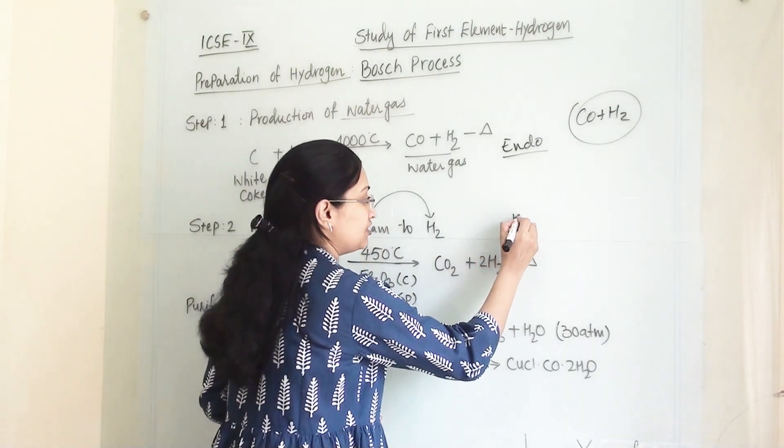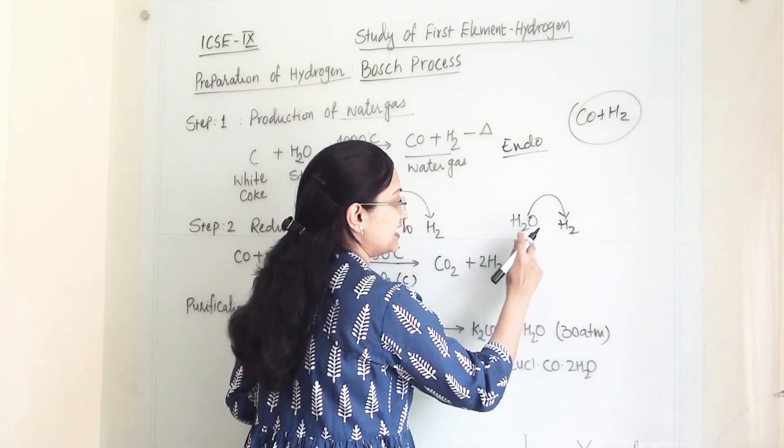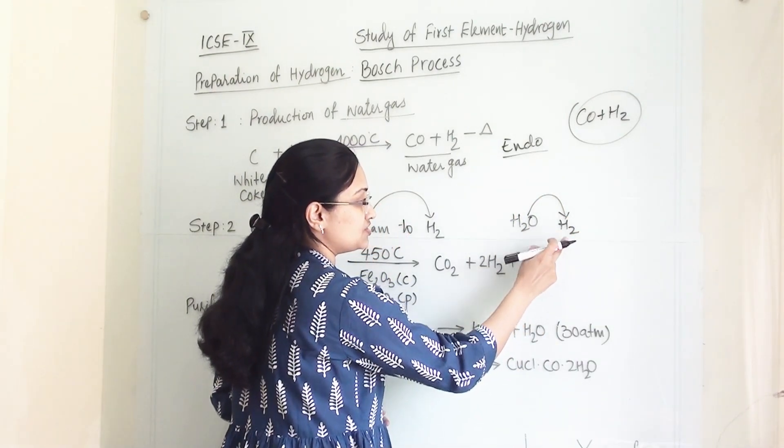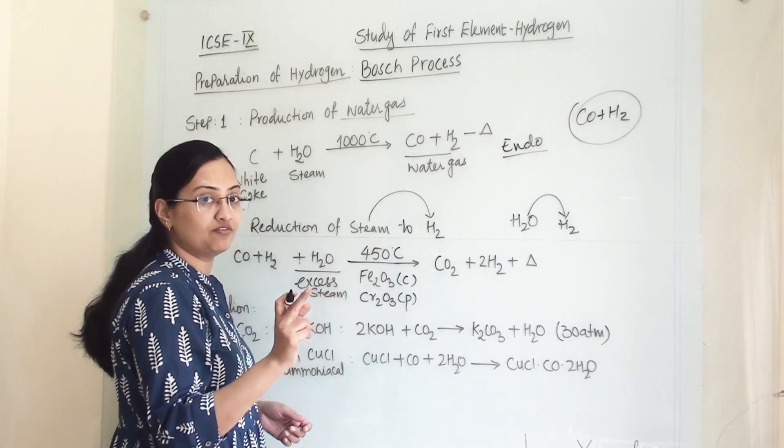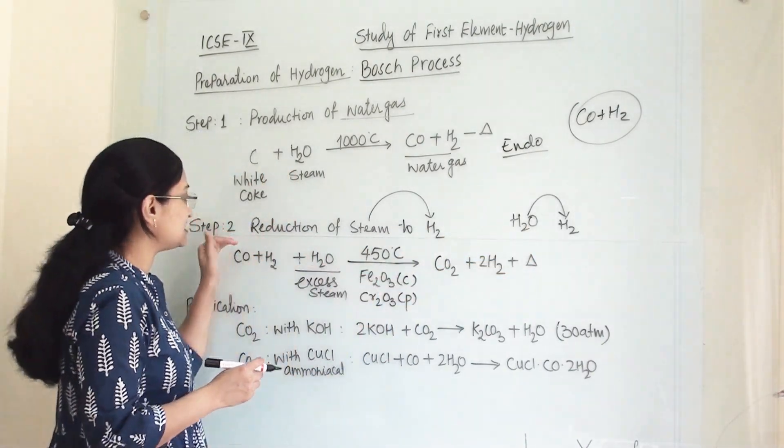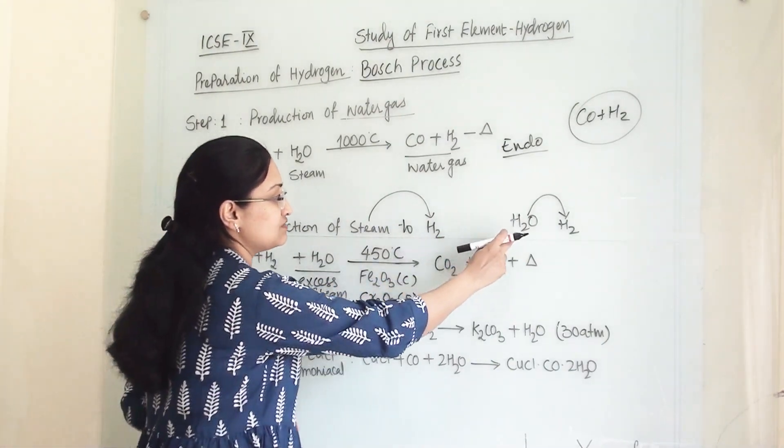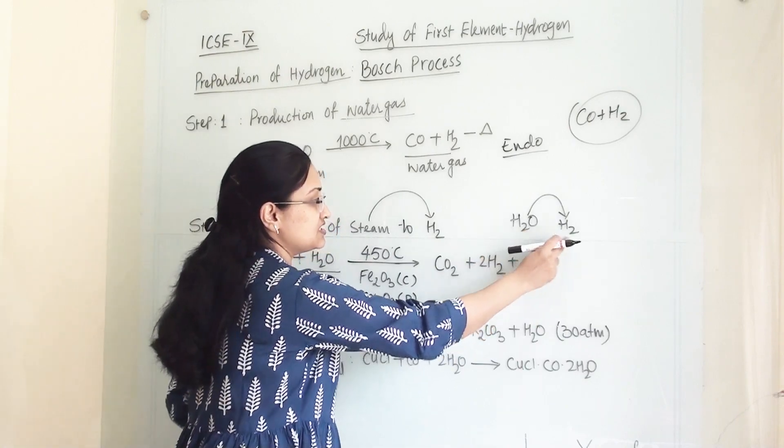Because steam's molecular formula is H2O, and when it becomes hydrogen, it is lacking oxygen. Wherever there is removal of oxygen, this process is termed as reduction. That's why this step is known as reduction of steam to hydrogen, from water to hydrogen. This is reduction.